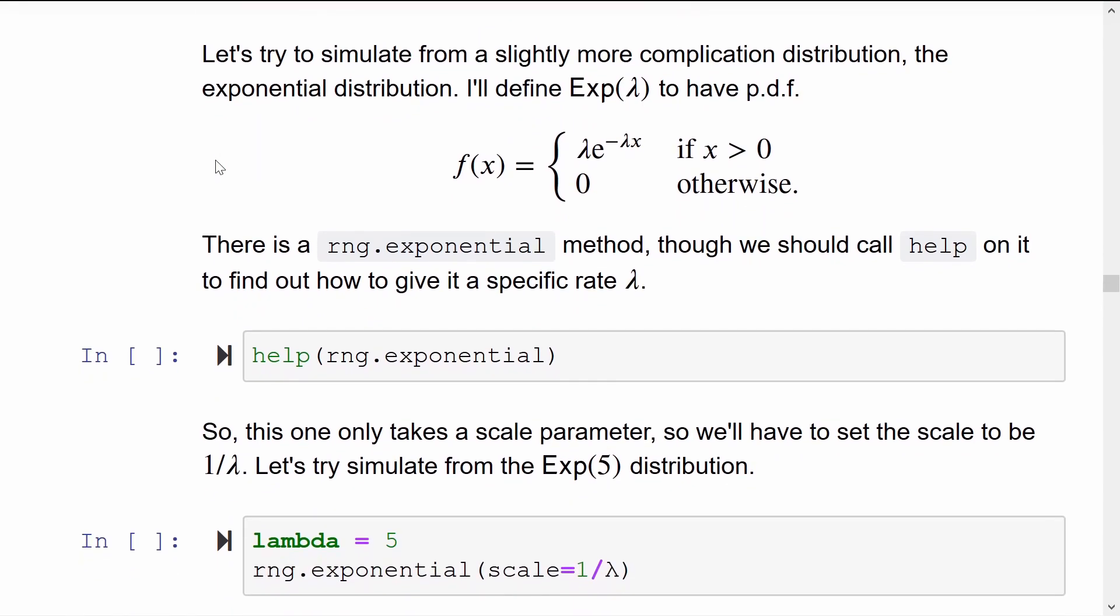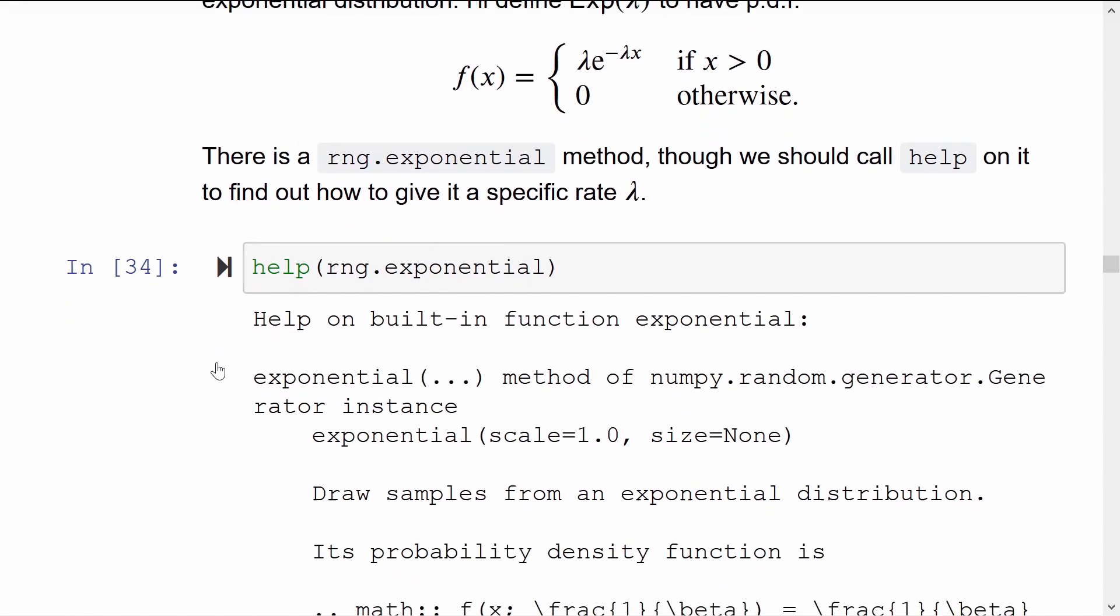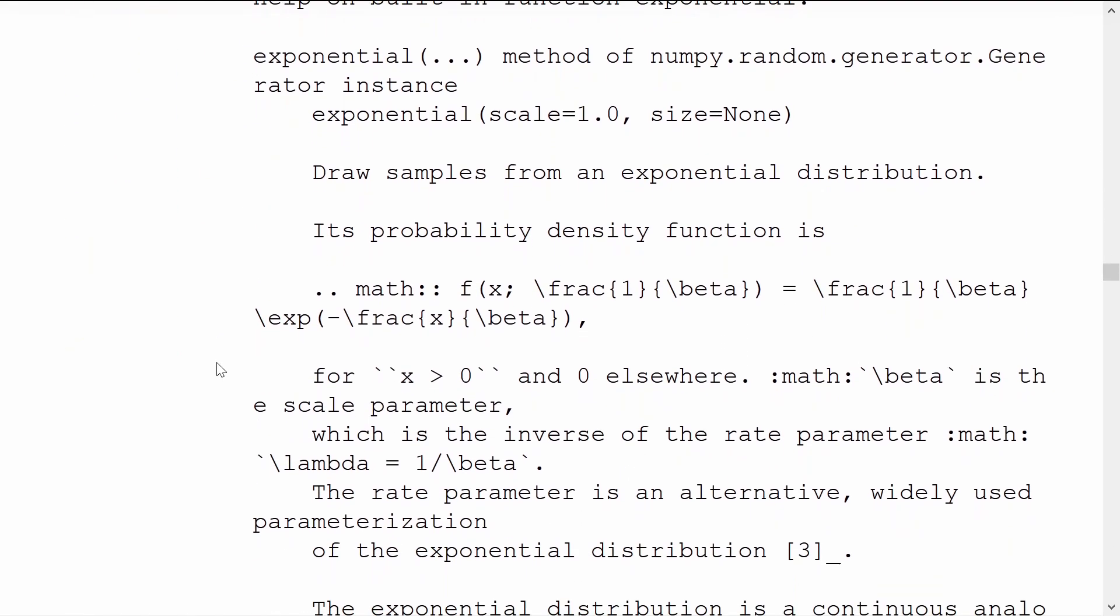Let's try for a slightly more complicated distribution. The exponential distribution, I'll define it with a rate parameter lambda. And I'll expect that NumPy won't agree with me on this way of defining the exponential. To check, I'll use the help function on rng.exponential and look through for its arguments and its probability density function.